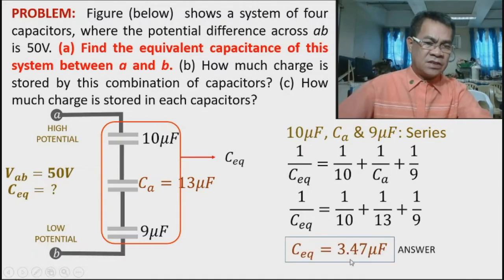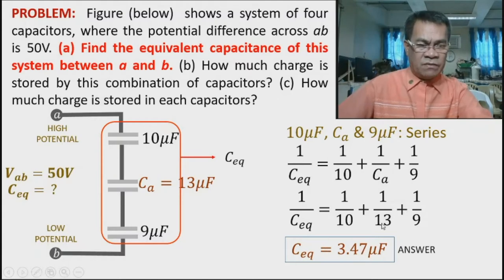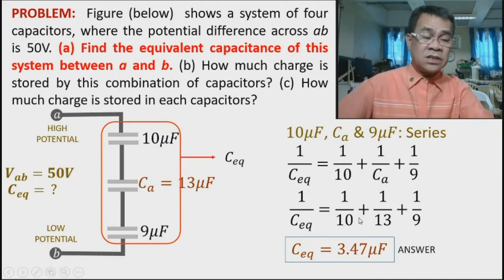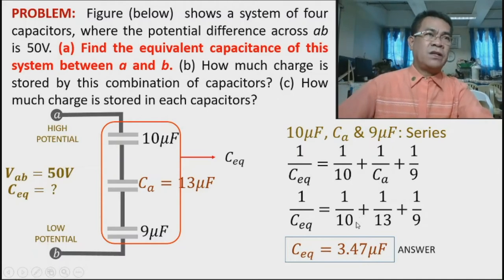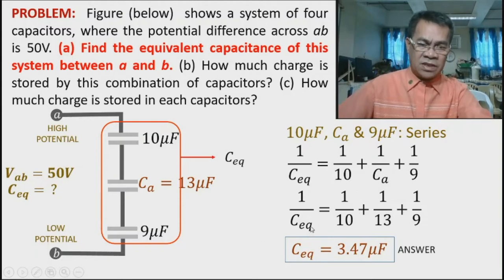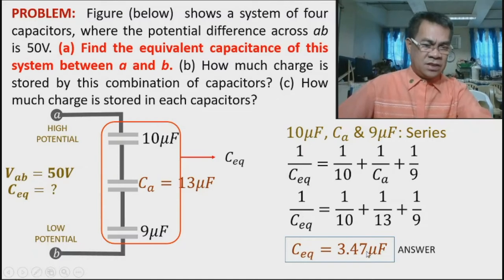So C_equivalent = 3.47 µF. This answers letter A: the equivalent capacitance of the system between A and B is 3.47 microfarad.